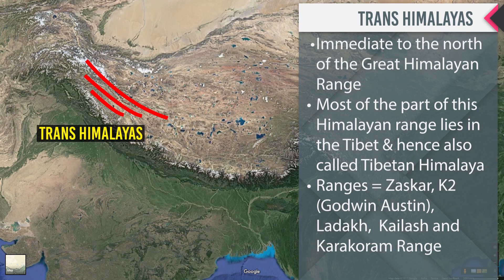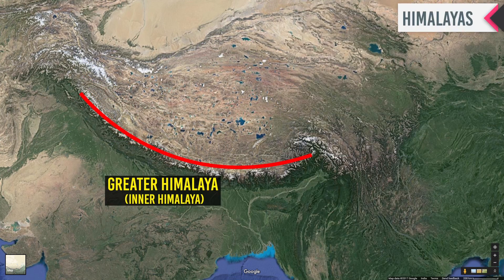The first is Trans Himalayas, which lie immediately to the north of the Great Himalayan Range. Most of this Himalayan range lies in Tibet and is hence also called the Tibetan Himalaya. Its ranges include Zaskar, Karakoram, Ladakh, Kailash, and the Karakoram range.